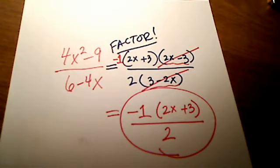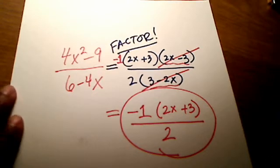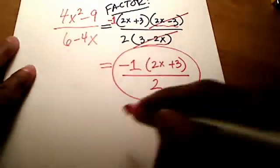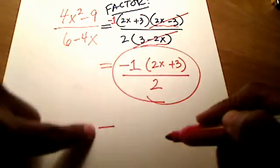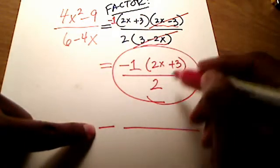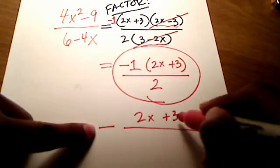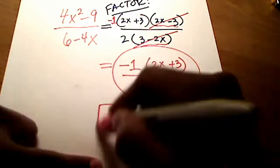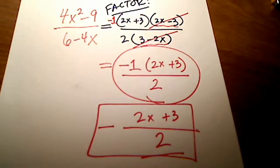You can write it in a bunch of different ways. If you want, you could write it this way. You could just put the negative out front like that. Put this stuff up top. 2x plus 3. And then just put the 2 on the bottom. You can write it that way if you want. You can do the exact same thing. You can even put the negative down here with the 2 if you want.